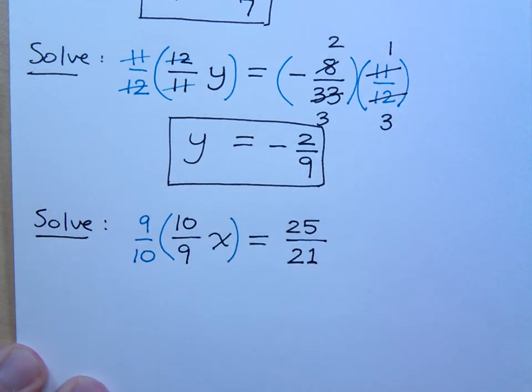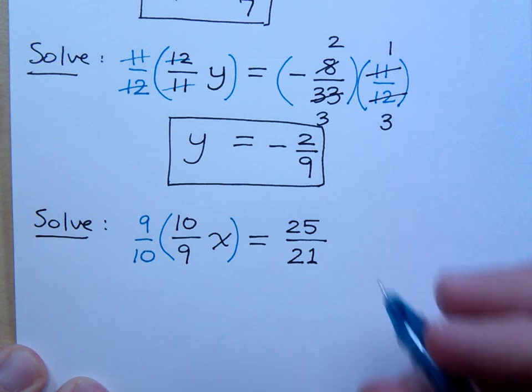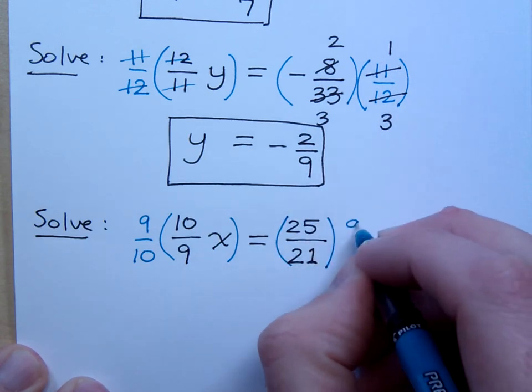Right, so I'm going to multiply times 9 over 10. If you don't believe me, if you wrote that as 10 over 9, you'd have 10 times 10 and 9 times 9, and that doesn't reduce away. But this will, right? But if I multiply the left side of the equation times 9 over 10, the right side of the equation must also be multiplied times 9 over 10.